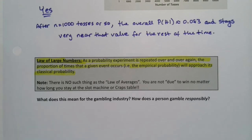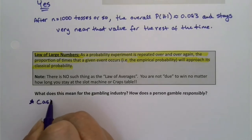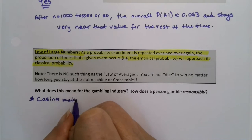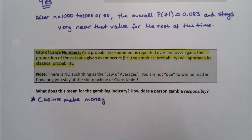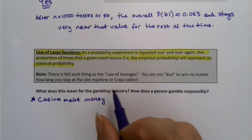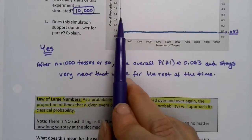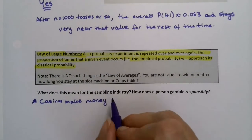What does this mean for the gambling industry? Casinos make money by keeping you there. Because they know that even if you're ahead and winning, if you stay in the long run, you will lose. That's the point. Even if you're winning at the beginning, if they keep you there long enough, you will lose money.